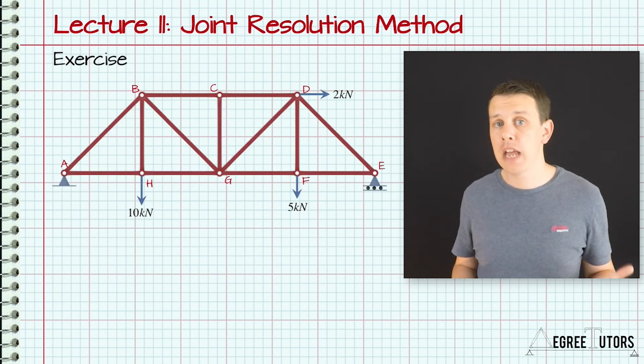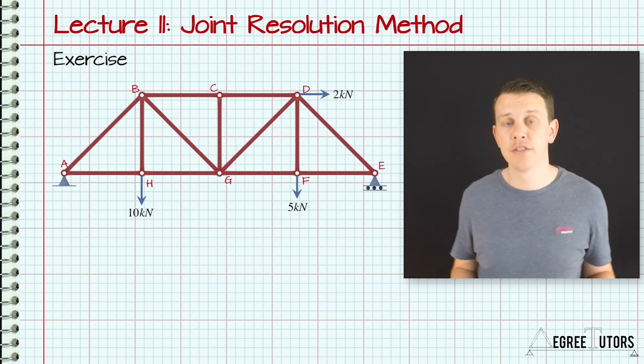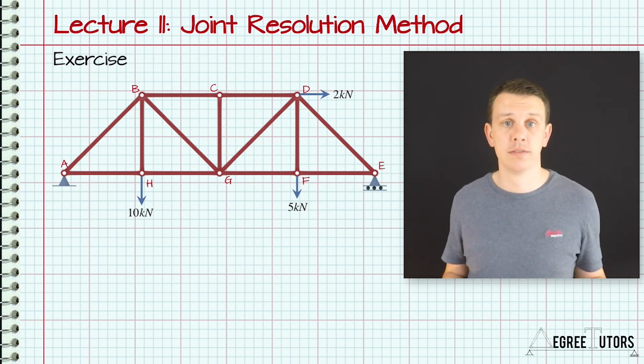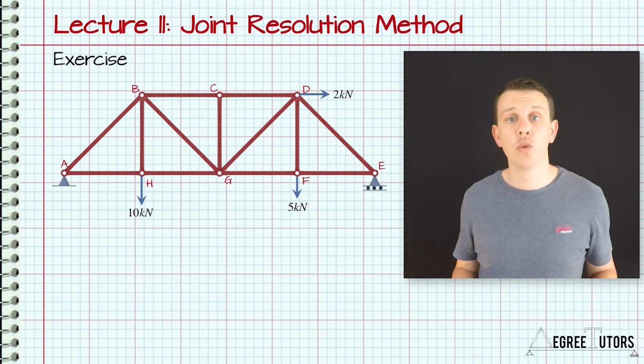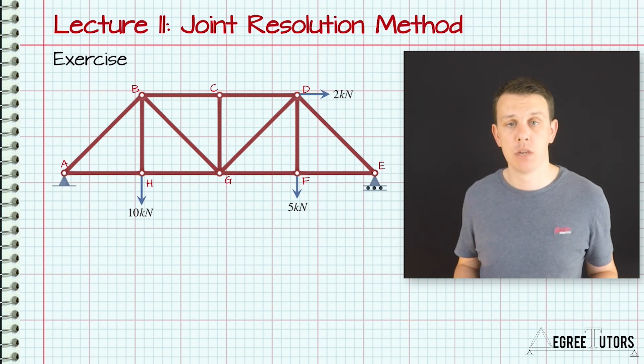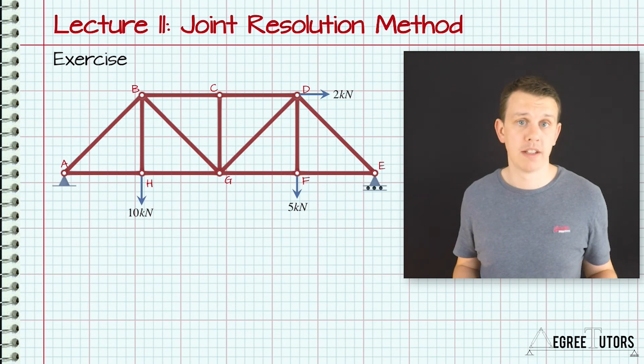Now remember, you are not going to be able to rely on symmetry now, so you are going to have to work through more joints within the structure to solve the problem. You can download the worked solution to this question in the supplementary material for this lecture. Also make sure you work through the examples at the end of this section. Now in the next lecture, we are going to discuss another method for determining the internal member forces within a structure. This method is called the method of sections. This has one particular advantage over the joint resolution method which we have just discussed.